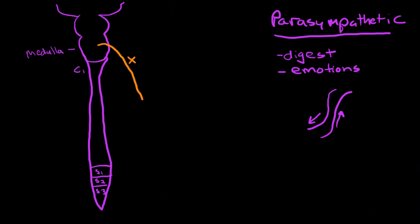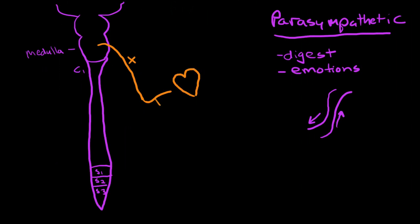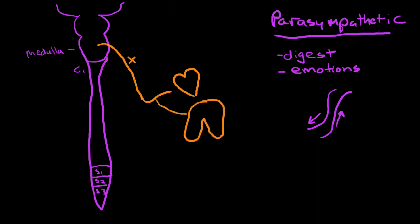Cranial nerve number 10 is very important because it is the way the parasympathetic nervous system communicates with the heart, the lungs, the stomach, and the bowel.